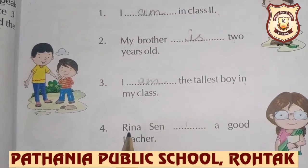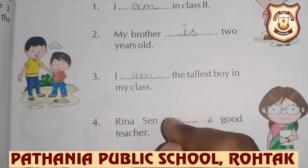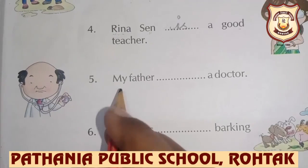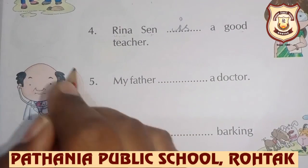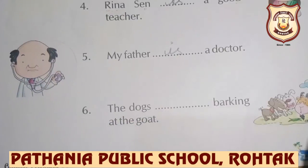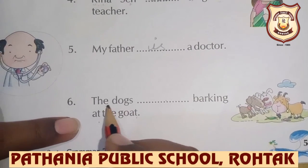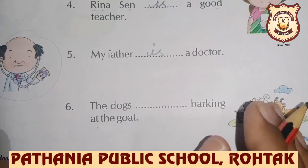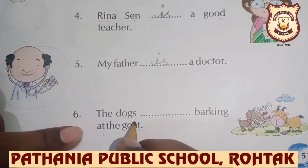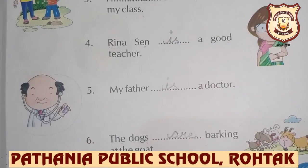Number 4: Rina Sane — a good teacher. Rina Sane is a single person, so we use 'is'. Rina Sane is a good teacher. My father — a doctor. My father is a single person, again 'is'. My father is a doctor. The dogs — barking at the goat. The dogs — here we are talking about more than one, so: The dogs are barking at the goat.